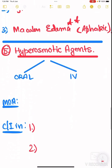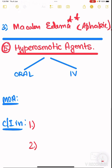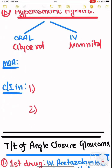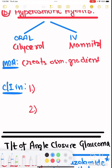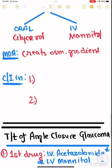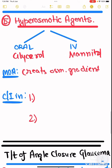Lastly, hyperosmotic agents: orally, glycerol is used; intravenously, mannitol is used. The mechanism of action is that it creates an osmotic gradient. Contraindications for osmotic agents are congestive heart failure and acute renal failure.